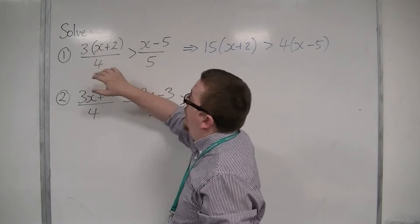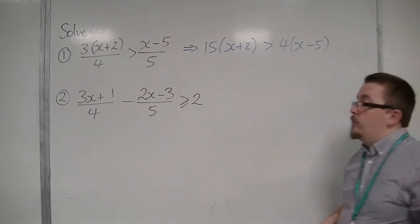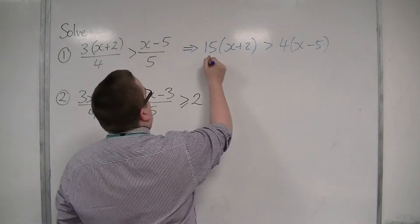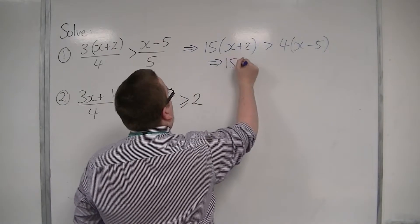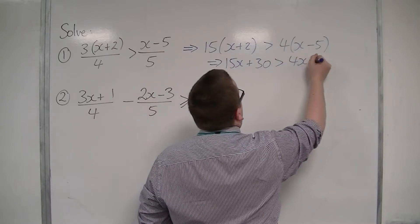Effectively the 5 went there, and the 4 went up there. Now I'm going to expand the brackets. So we're going to have 15x plus 30 is greater than 4x minus 20.